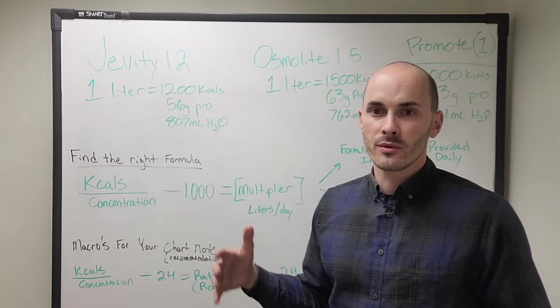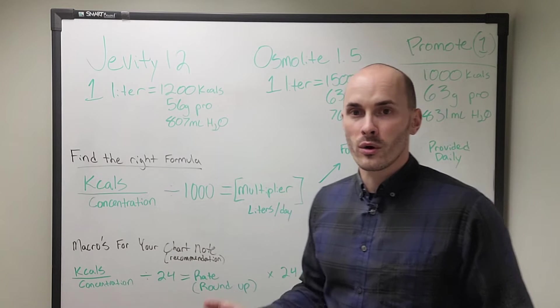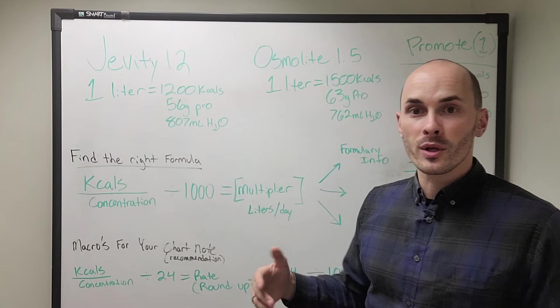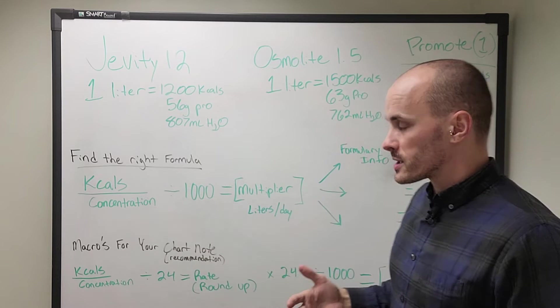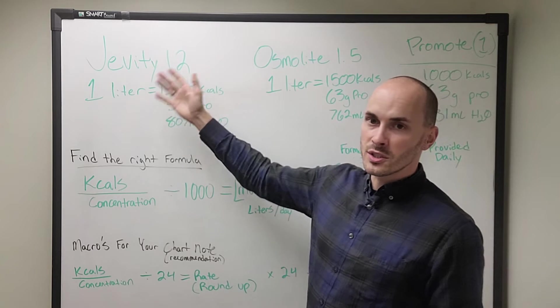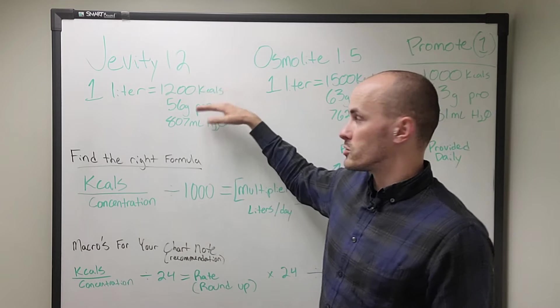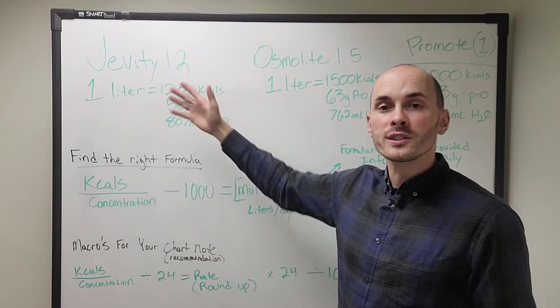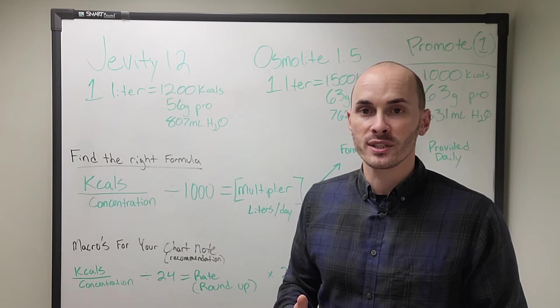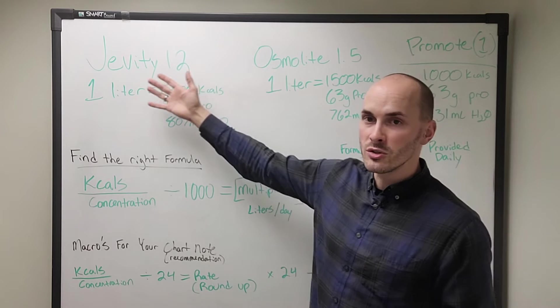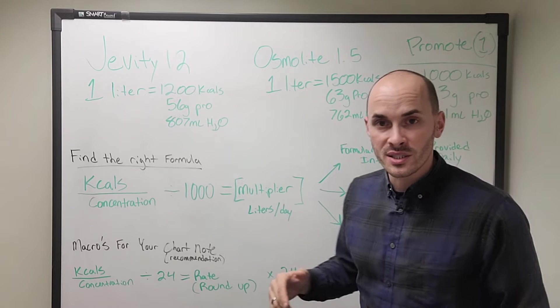And what we saw in some of those equations to figure out what would be the right nutrition support formula for the patient, some of these formulas would both work. And what I want to touch on is if someone chooses Jevity over Osmolite, it's typically not going to be because of the macronutrients are different. Oftentimes you'll have different formulas that both meet the calorie and protein needs for your patient.